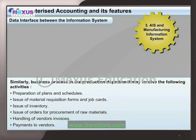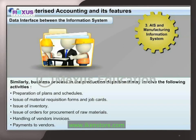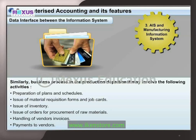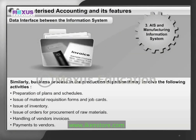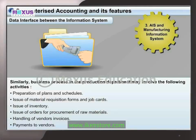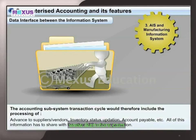Regarding AIS and the Manufacturing Information System: the business process in the production department may involve preparation of plans and schedules, issue of material requisition forms and job cards, issue of inventory, issue of orders for procurement of raw materials, handling of vendor invoices, and payments to vendors. The accounting subsystem transaction cycle would therefore include processing of purchase orders, advances to suppliers or vendors, inventory status updation, and accounts payable. All of this information has to be shared with the other MIS in the organization.